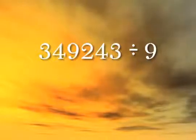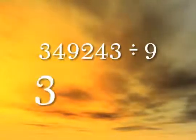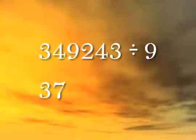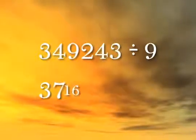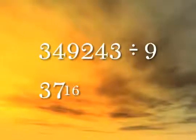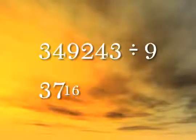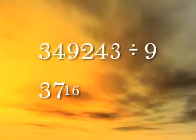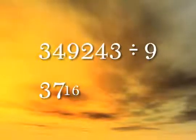Bring down the first digit and add in sequence — bring down the three, four plus three is seven, nine plus seven is sixteen. When we get a number greater than nine, we need to consider how many nines there are in the number 349,243.